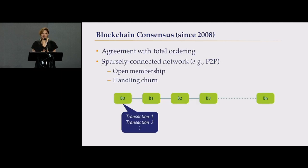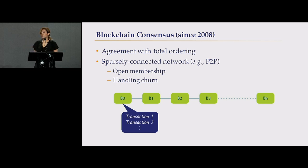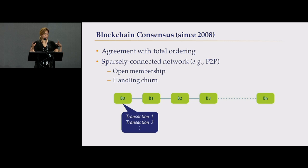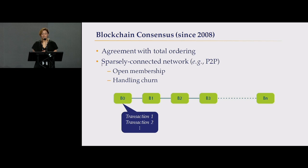Why is consensus related to blockchain? Blockchain is actually a consensus — it's a sequence of agreements with total ordering. The main problem blockchain solves is the Byzantine agreement and consensus problem. But blockchain adds more to traditional consensus protocols. In traditional consensus, the network uses point-to-point connections where every machine connects to every other machine, which is not scalable. In blockchain, instead they use a sparsely connected P2P network, which is a good approach for scalability.